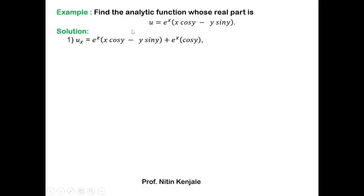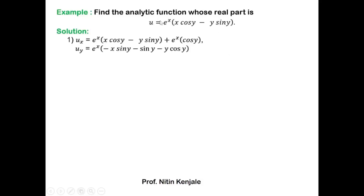As the first step suggests, we find the partial derivative of u with respect to x, keeping y constant. Here u is a product of two terms: e^x and the bracket (x·cos y − y·sin y). Using the product rule, u_x = e^x·(x·cos y − y·sin y) + e^x·(cos y − 0), since the derivative of x·cos y with respect to x is cos y, and y·sin y has no x so its derivative is 0.